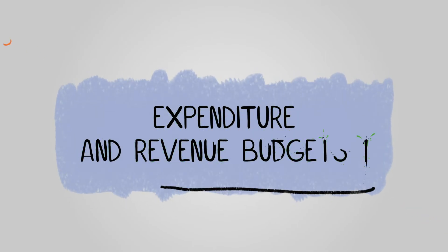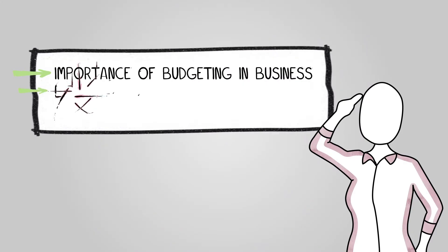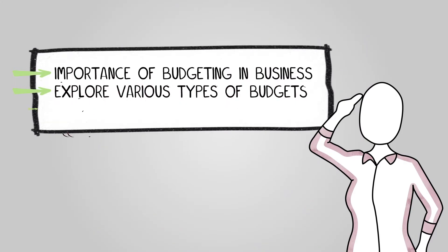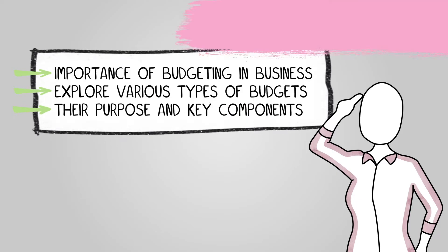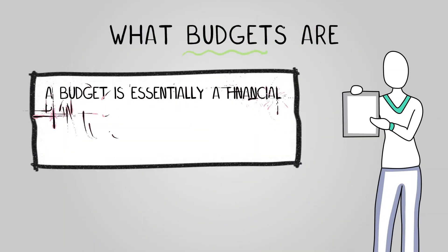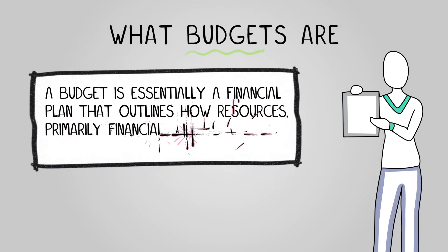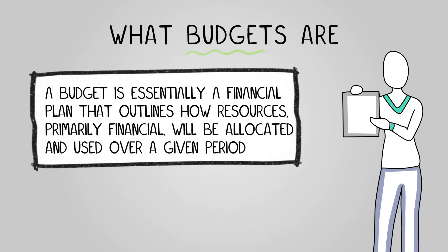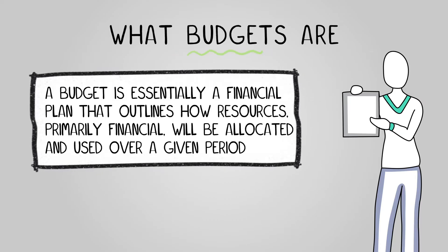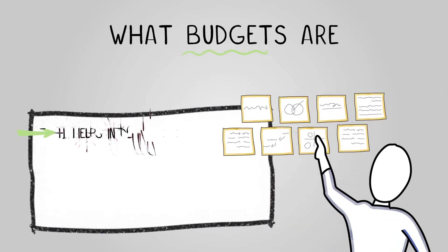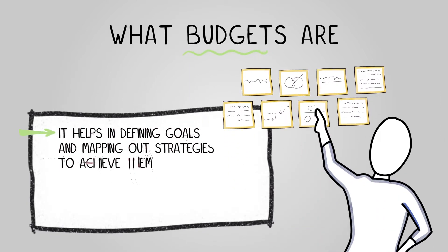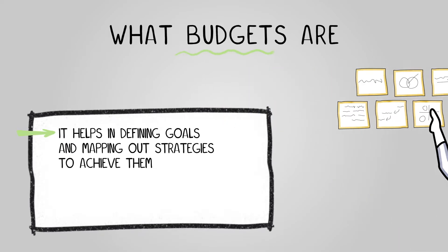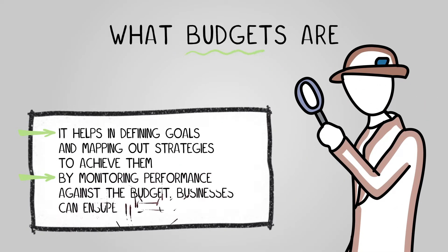Welcome to our first lesson on expenditure and revenue budgets. Here we'll learn about the importance of budgeting in business and explore various types of budgets, their purpose, and key components. A budget is essentially a financial plan that outlines how resources — primarily financial — will be allocated and used over a given period. It helps in defining goals, mapping out strategies to achieve them, and monitoring performance to ensure businesses stay on track and make necessary adjustments.